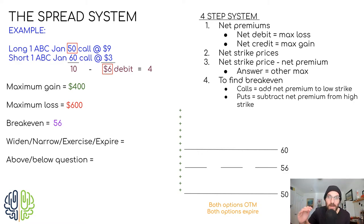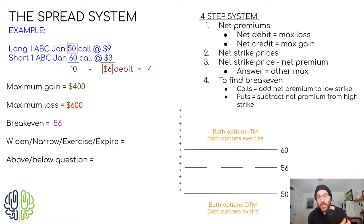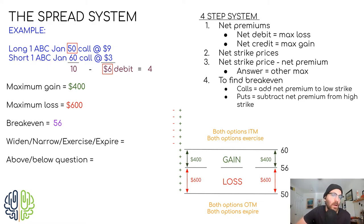Once we go above 60, the short call goes in the money — and when you sell an option, you do not want it to go in the money. The short call starts losing money for the investor as the market goes above 60, and both options start offsetting each other. For every dollar gained on the long option, there's a dollar lost on the short option. So this investor is really betting that the market price is going to go above 56 — the further it goes above 56, the more money they make. The only problem is above 60, gains on the long call start being offset by the short call.